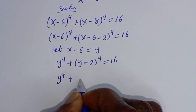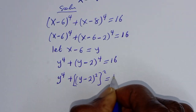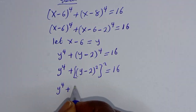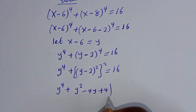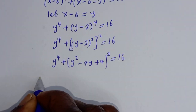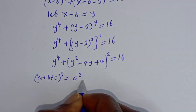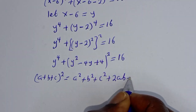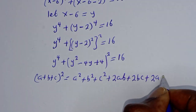y to the power of 4 plus y minus 2 squared squared is equal to 16. Now let's expand this: y to the power of 4 plus y squared minus 4y plus 4 squared is equal to 16. Take note that if you have a plus b plus c squared, this equals a squared plus b squared plus c squared plus 2ab plus 2bc plus 2ac.